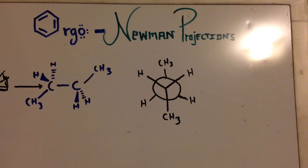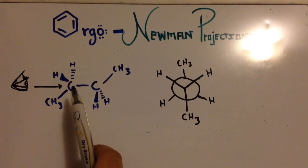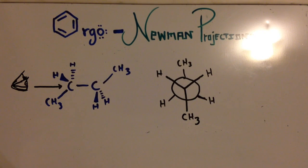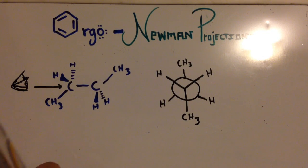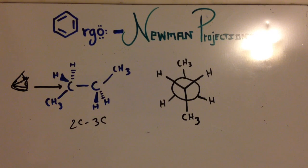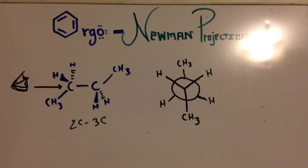Hey, what's up YouTube, this is Iconic and in today's video we're going to talk about Newman projections. Newman projections are nothing more than a fancy way of looking at your molecule. In orgo you are required to know how to convert from the standard way of looking at a molecule into a Newman projection and go back and forth. Right off the bat, this is a four-carbon molecule with all single bonds — this is butane — and we are looking at it from the second to the third carbon.